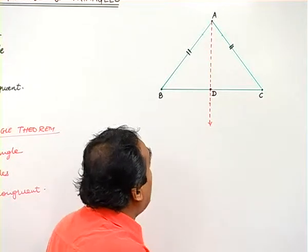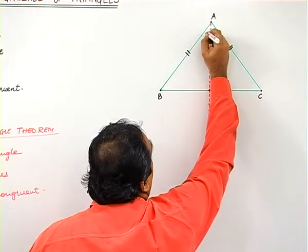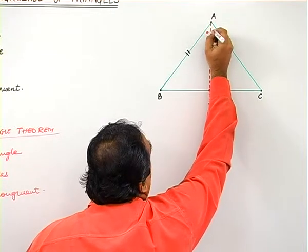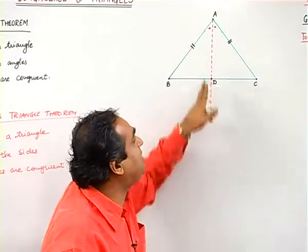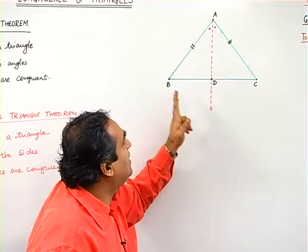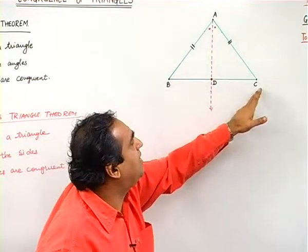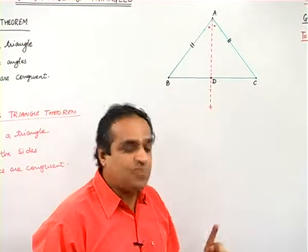So this is the angle bisector, means that this angle is congruent to this angle. Angle bisector means that this angle bisector AD divides angle BAC into two equal angles. This is by construction.